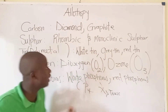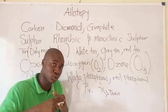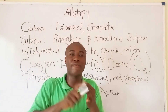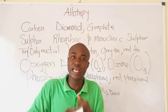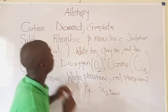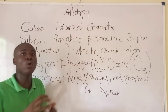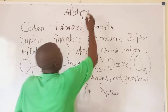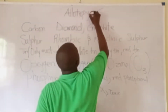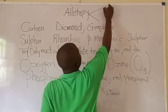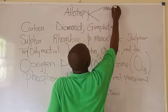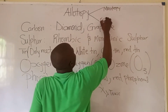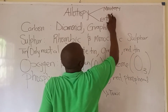These are some basic elements and their allotropes. These elements are very important for your JAM exam, so take note. Allotropy is divided into two forms: the first is called monotropy, and the other is called enantiotropy.